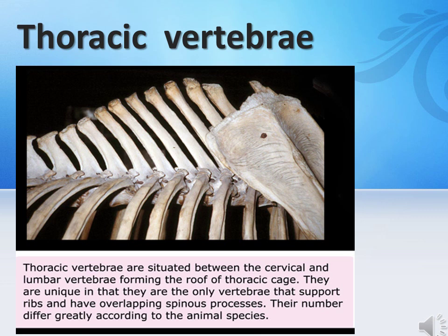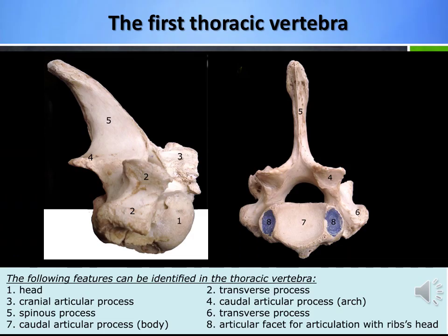The transverse processes of the last 4 to 5 thoracic vertebrae bear mammillary processes. As mentioned before, the 7th cervical vertebra is greatly similar to the 1st thoracic vertebra. Note that the 1st thoracic vertebra has costal facets on both the cranial and caudal surfaces of the vertebral body.